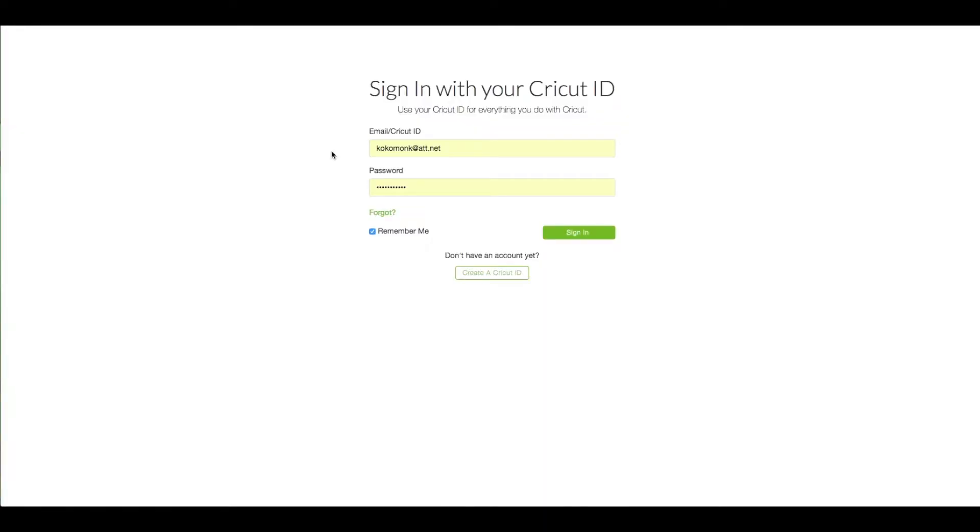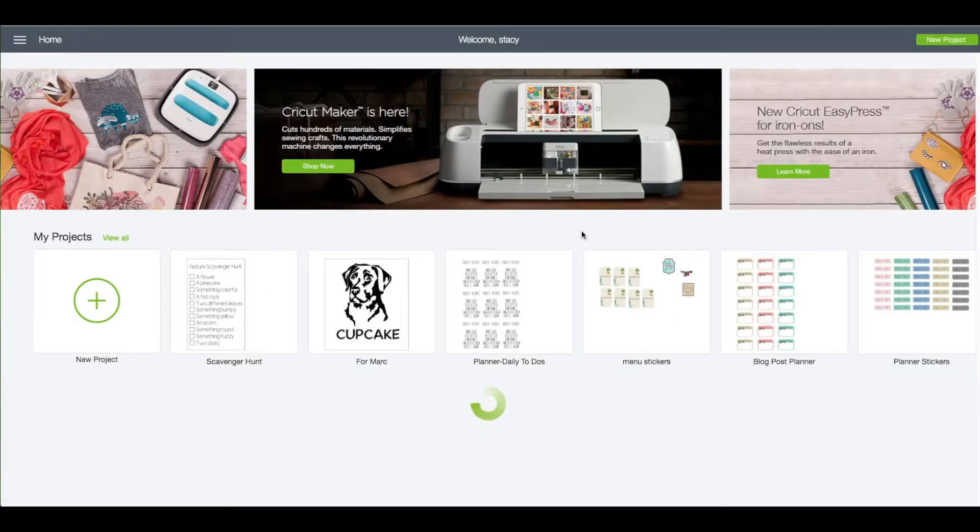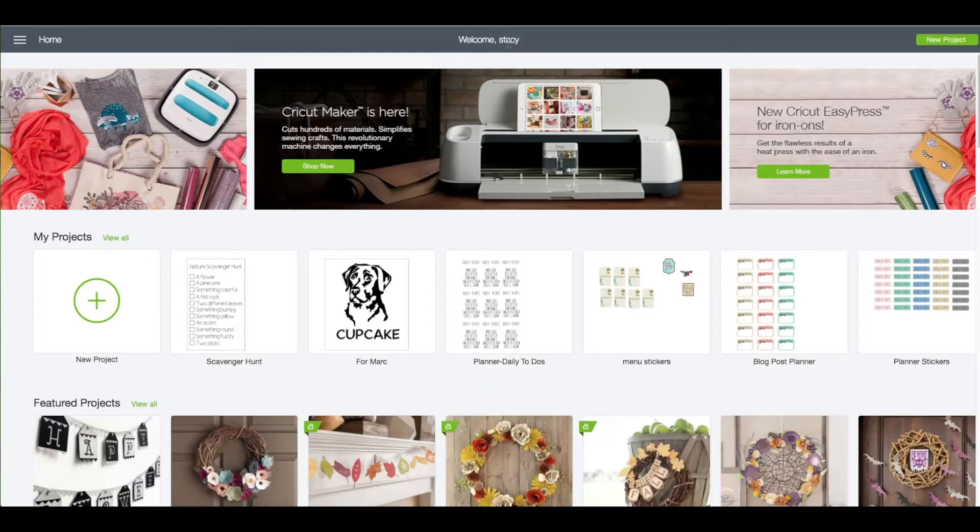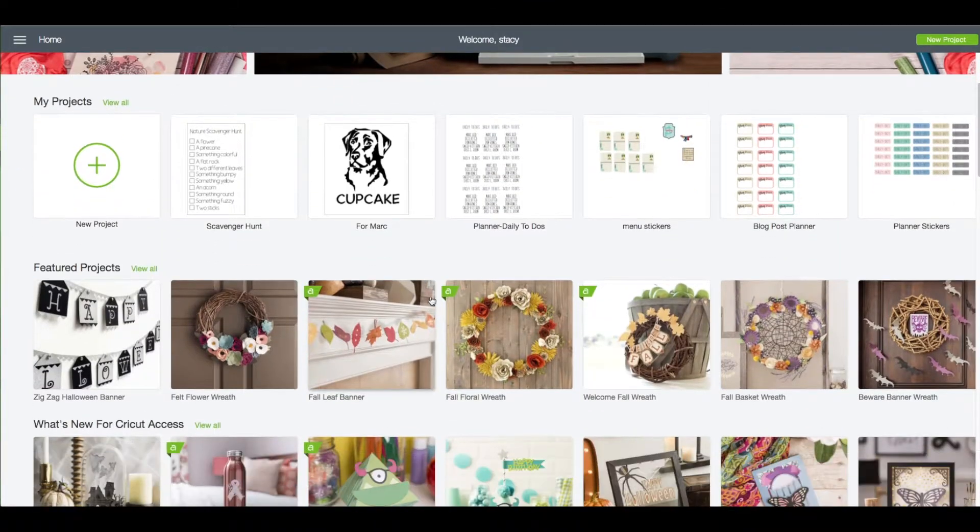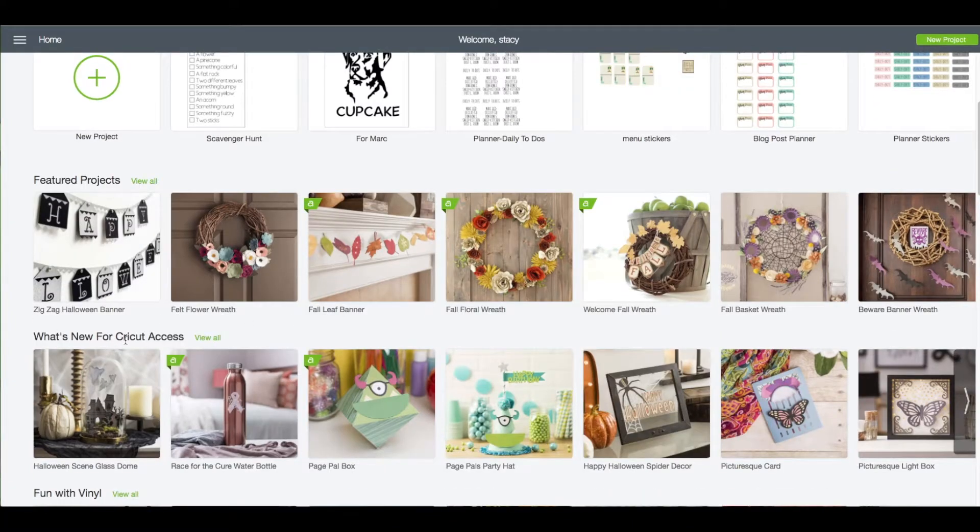At the computer you want to go to design.cricut.com. You will see this screen. Enter in your email and your password. Click on sign in. When you see your name at the very top that verifies that you were logged in. On this page you want to scroll down until you come across the what's new for Cricut access. Click on view all.